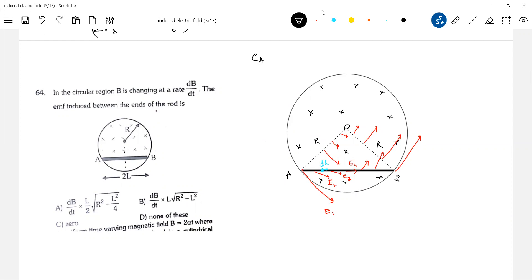So EAB will become equal to E1 DL cosθ1 plus E2 DL cosθ2 and so on.